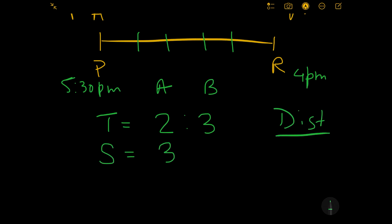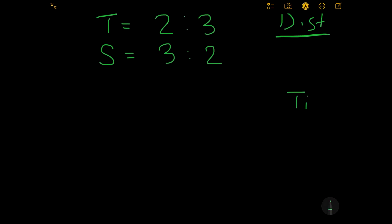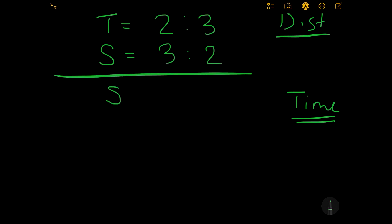Since the distance is constant and the time ratio is 2:3, we can say that the speed will be in the inverse ratio of 3:2. Now something you need to understand and memorize: whenever we are talking about meeting position or meeting time, it is first important to make the distance constant — which we have already done — and find out the ratio of speed. The next step is to make the time constant. If we keep the time constant, then the speed ratio of 3:2 becomes the distance ratio of 3:2 as well.